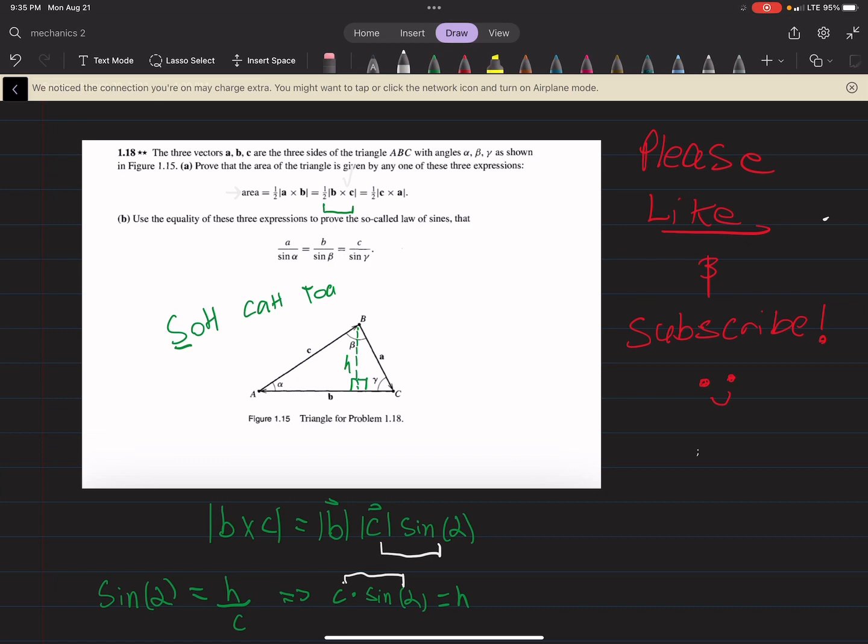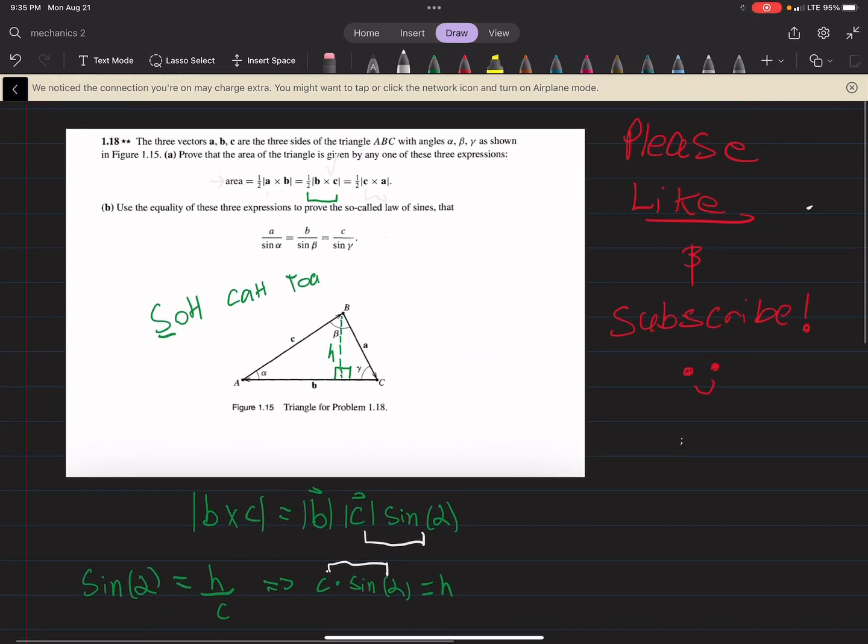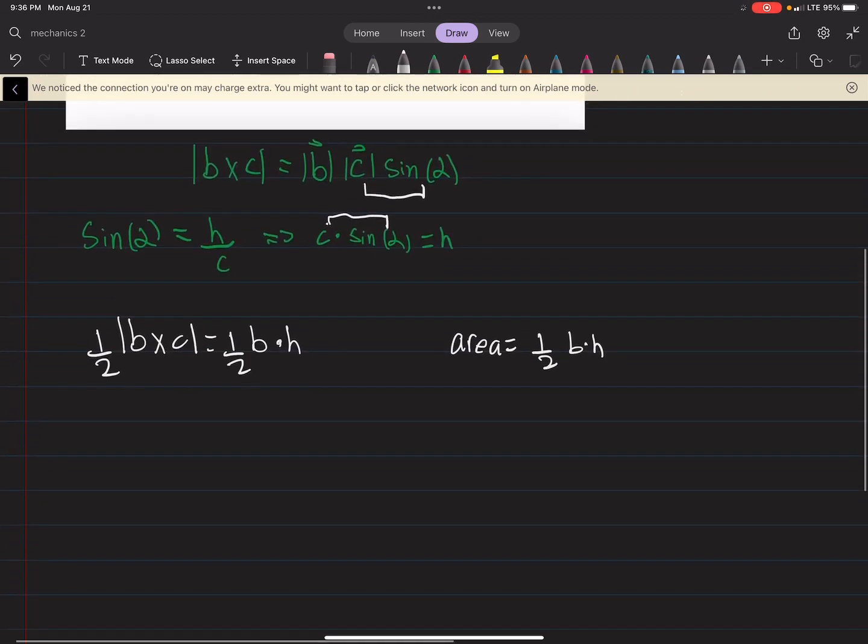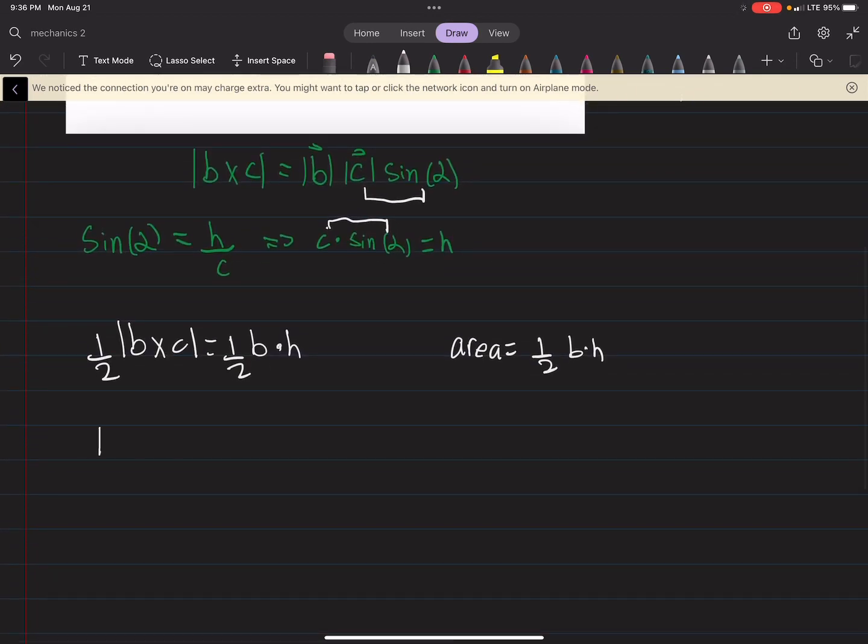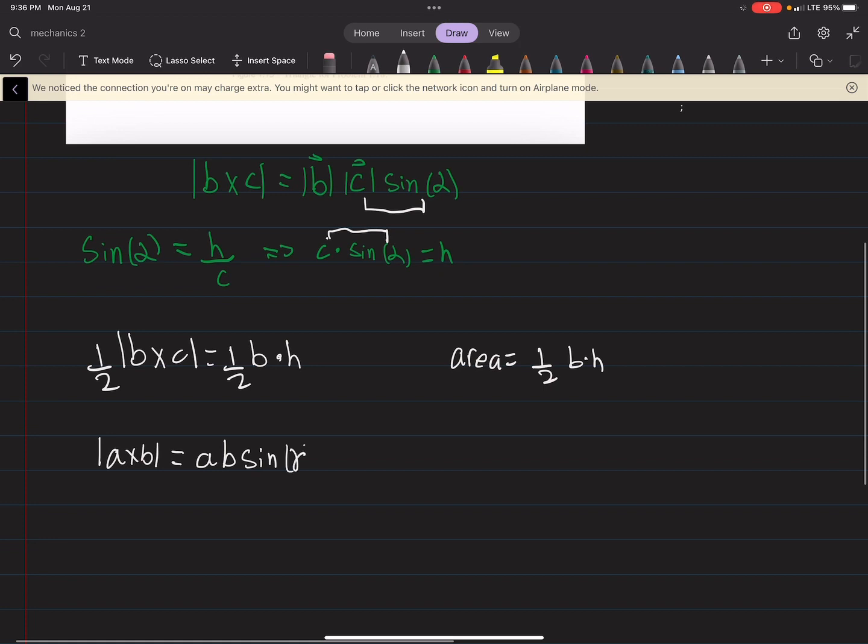Now, it's pretty easy to do this with C cross A as well, as well as A cross B. They're pretty similar. If we do A cross B, the magnitude of A cross B, again, that's A, B, the magnitude of them, sine of the angle between them, in this case, it's gamma. But again, if we look at that right triangle, sine of gamma is equal to opposite over the hypotenuse of that triangle.